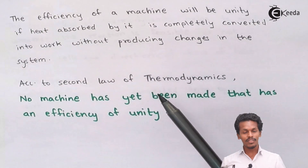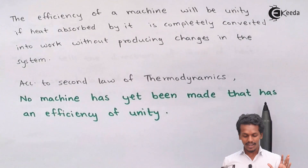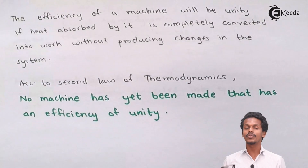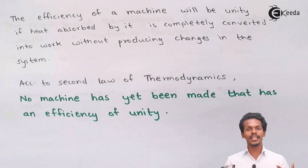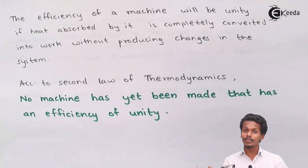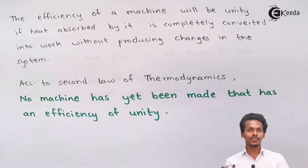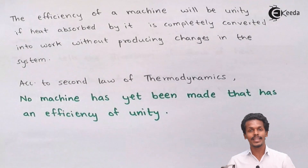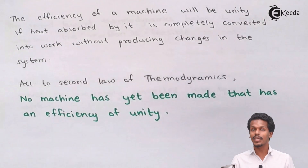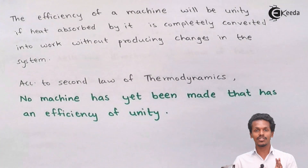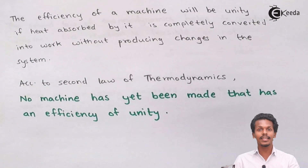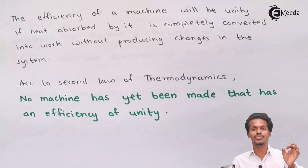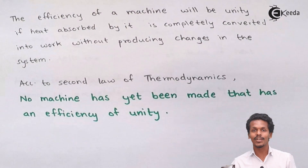According to the second law of thermodynamics, no machine has yet been made that has an efficiency of unity. Efficiency here means the ratio of work done to the heat provided. Making efficiency equal to one would mean 100% work output, which is not possible according to the second law. The second law is based on the conversion of energy from one form to another — it won't be converted completely unless it produces a permanent change in the system or the surroundings.